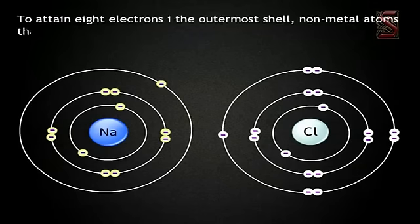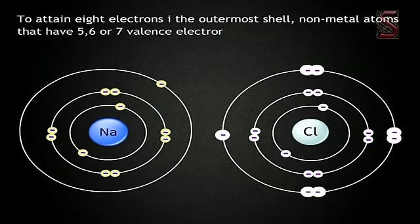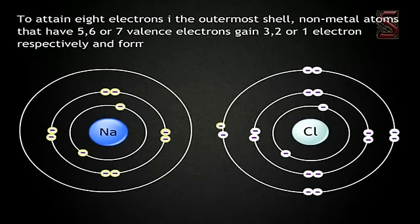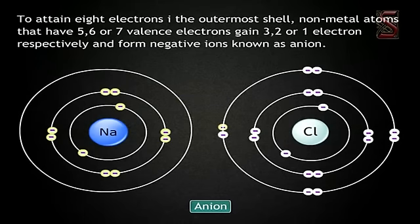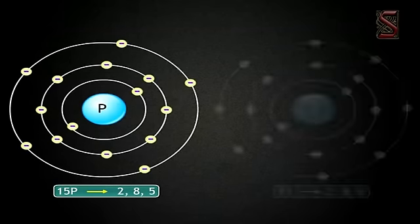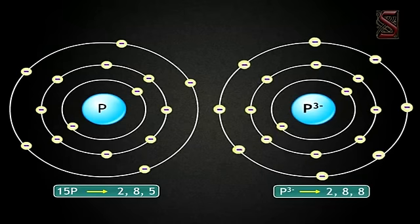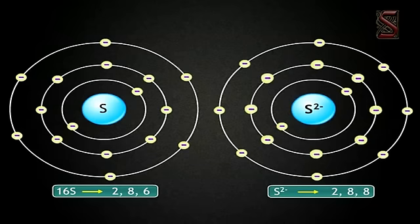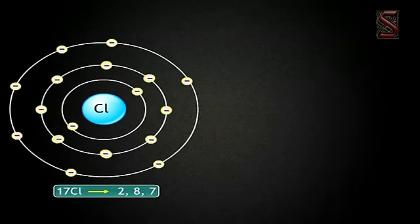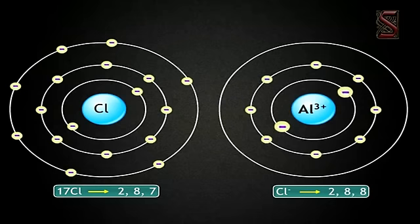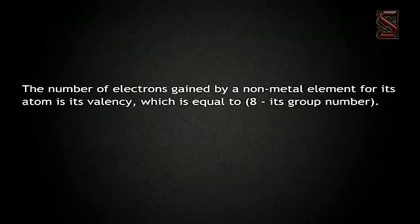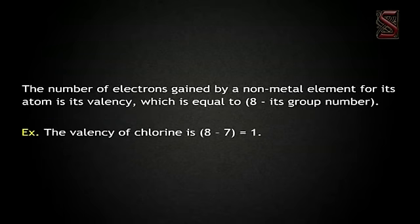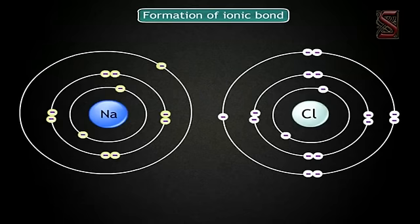To attain eight electrons in the outermost shell, non-metal atoms that have five, six, or seven valence electrons gain three, two, or one electron respectively and form negative ions known as anions. For example, phosphorus (P, EC: 2,8,5) gains three electrons to form P³⁻ (EC: 2,8,8); chlorine (Cl, EC: 2,8,7) gains one electron to form Cl⁻ (EC: 2,8,8). The valency of a non-metal atom equals eight minus its group number — for example, the valency of chlorine is 8 − 7 = 1.